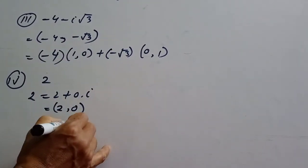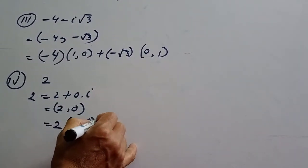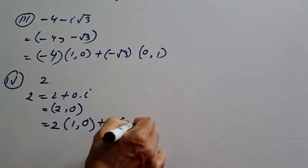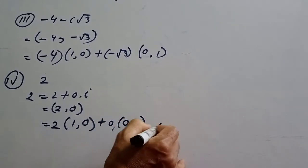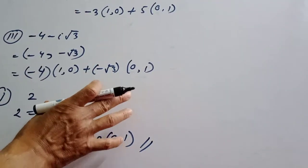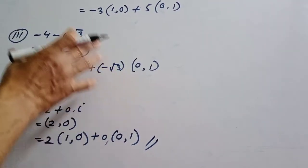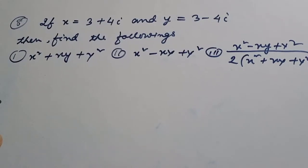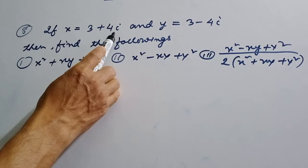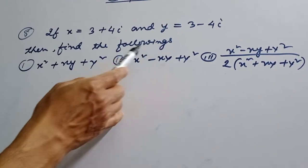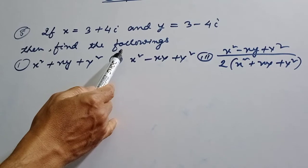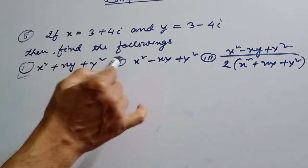1,0 — 1,0 — 0,0 — 0,1. Then 1,0 — 2,0 — 1,0 — 2,0 in ordered pair form.